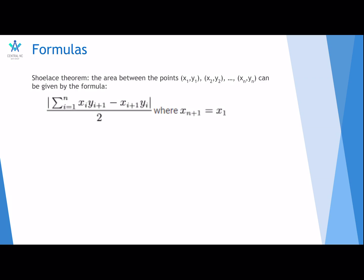if they're in either clockwise or counterclockwise order, it can be given by the formula of sigma from i to n, xi*y(i+1) minus x(i+1)*yi over 2, the absolute value of that, where x(n+1) equals x1, and y(n+1) equals y1.